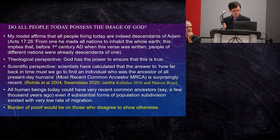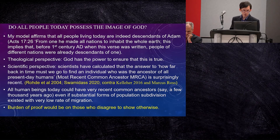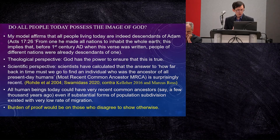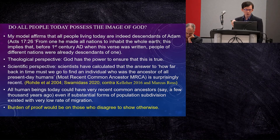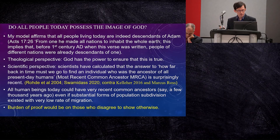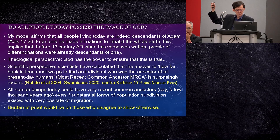My model also affirms that all people today — all anatomical homo today around the world — are indeed descendants of Adam. This is based on a traditional interpretation of Acts 17:26, which says that from one, God made all nations to inhabit the whole earth. This implies that before the first century AD when this verse was written, people of different nations were already descendants of one. From a theological perspective, an omnipotent God has the power to ensure that this is true. From a scientific perspective, this is compatible with science as well, because scientists have discovered that the most recent common ancestor — MRCA — of all present-day humans is surprisingly recent. On my model, Adam doesn't have to be the most recent one; he just had to be a common ancestor. The fact that the MRCA requires just a few thousand years shows that my model is compatible with science.